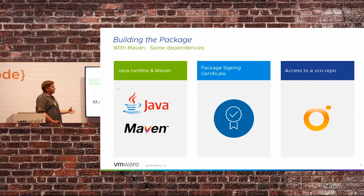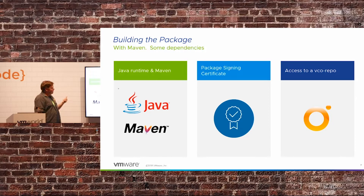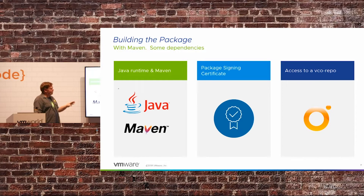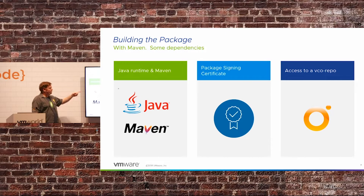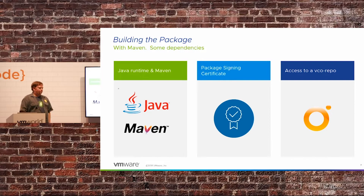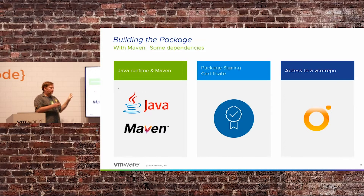Once we have all the source out of VRO, we want to be able to build a package. There are a couple of dependencies for this. You need a Java runtime, a current version of Maven which is a build tool, and you'll need to create a package signing certificate. You'll also need access to a VCO repo, which has all the magic jars and whatnot that Maven needs to build your package file. By default you can get the VCO repo from a standalone VRO appliance. Once you've exported that initial source package, it has hard-coded the URL to the VCO repo to get the plugins Maven needs.